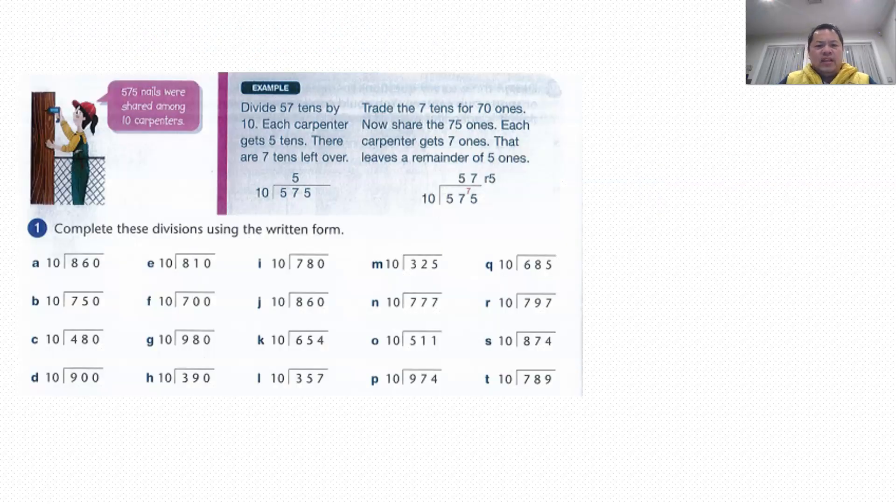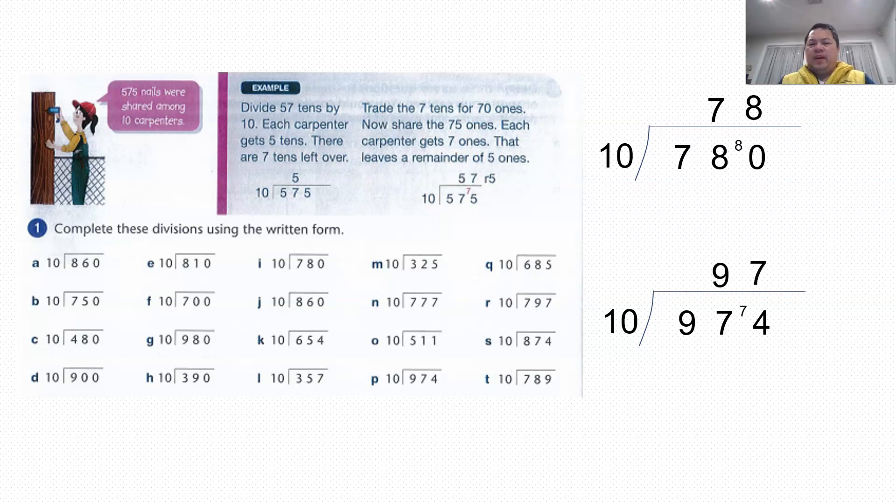So for the next activity, let's look at the book's example. The book actually requires us to have a remainder as a number. So you work it out again. So you follow what is required in the book. So I have a remainder. First part, 780 divided by 10. There's no remainder, it's 78. What about the next one? 974, which is question P. When I divide, I get a remainder of 4. So do state your remainder clearly if there is one in the activity book.